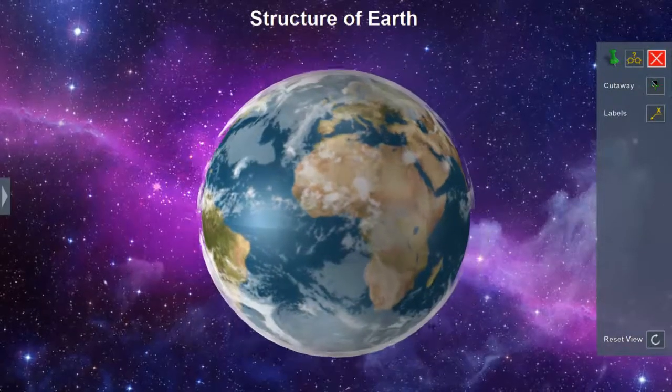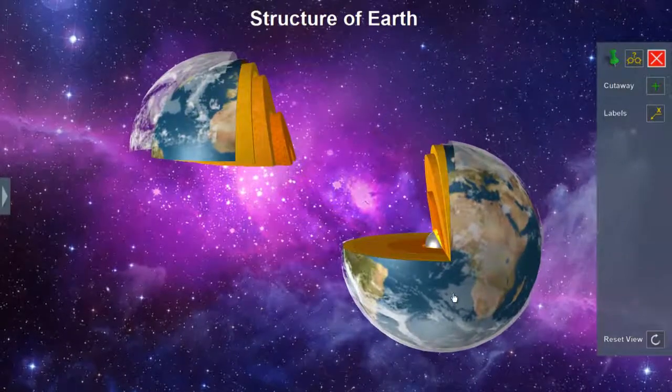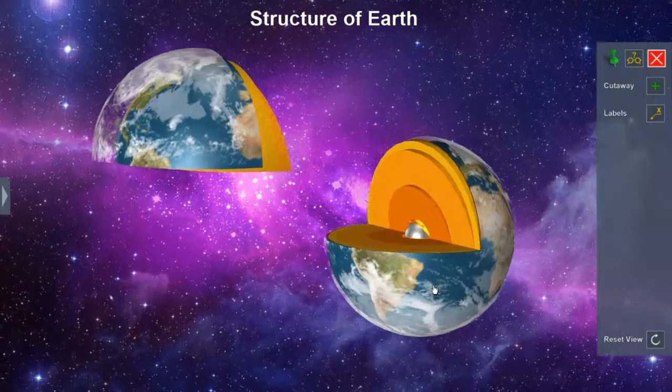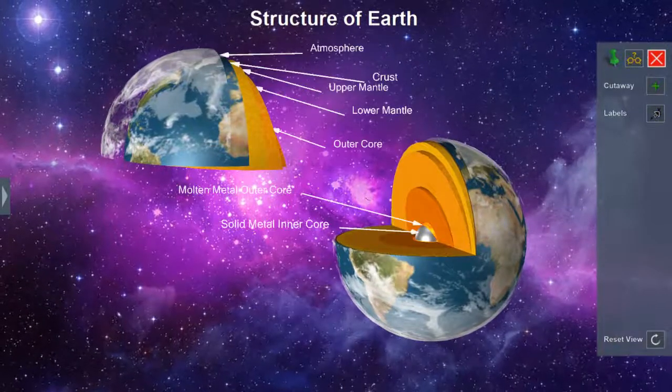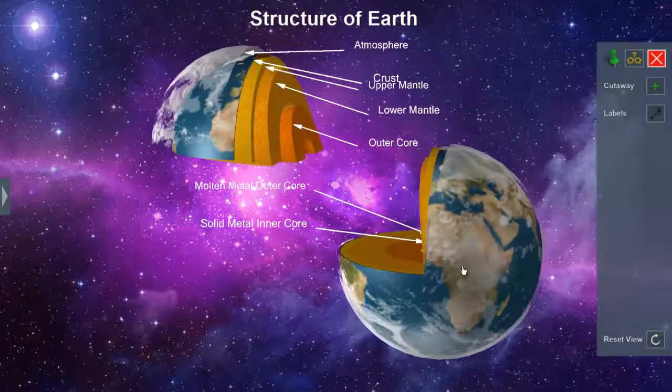At a slightly deeper level, it's possible to show a cross-section, revealing what's inside the Earth itself. Labels can be turned on and off at will. And note that, like the Earth itself, the labels live in 3D space.